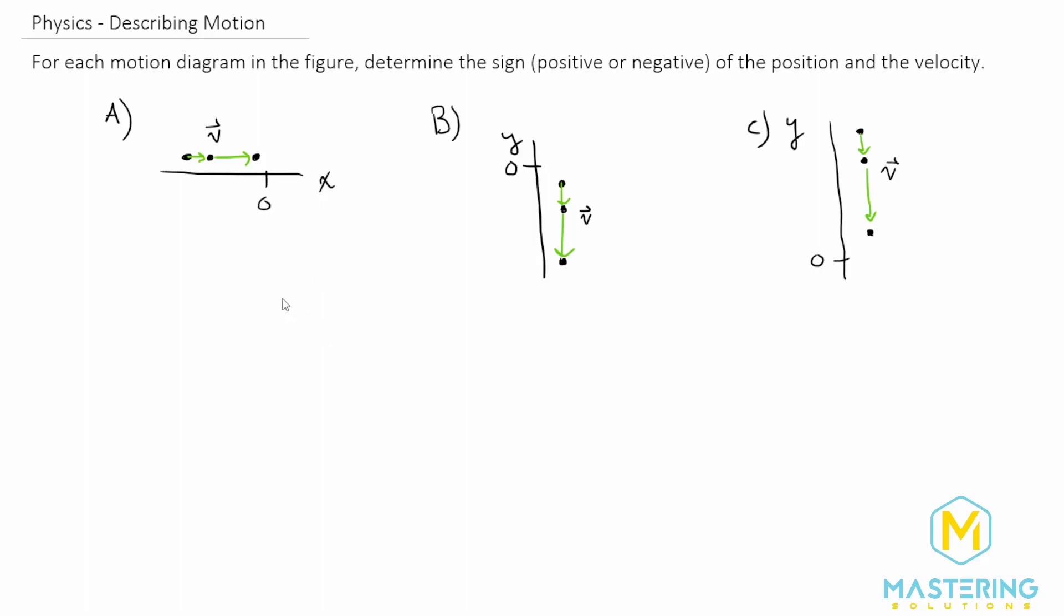Welcome to Mastering Solutions. In this problem they want us to look at a, b, and c and determine what the sign is, if it's positive or negative, for both the position and the velocity.